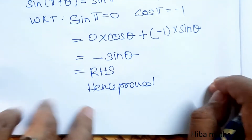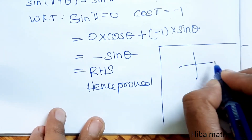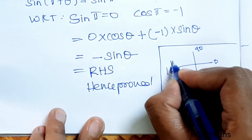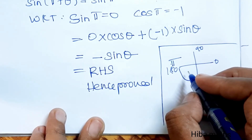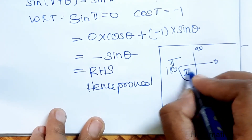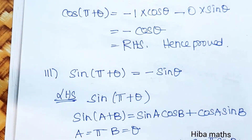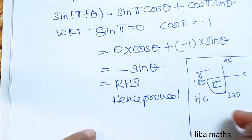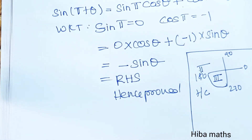We will also do a small alternative method using quadrants. The quadrant positions are: 0, 90, 180, 270. Here, π + θ = 180° + θ, which falls in the third quadrant. In the third quadrant, only tan and cot are positive; everything else is negative. So sin(π + θ) = −sin θ and cos(π + θ) = −cos θ. This is the simple quadrant method you can use if you know it.